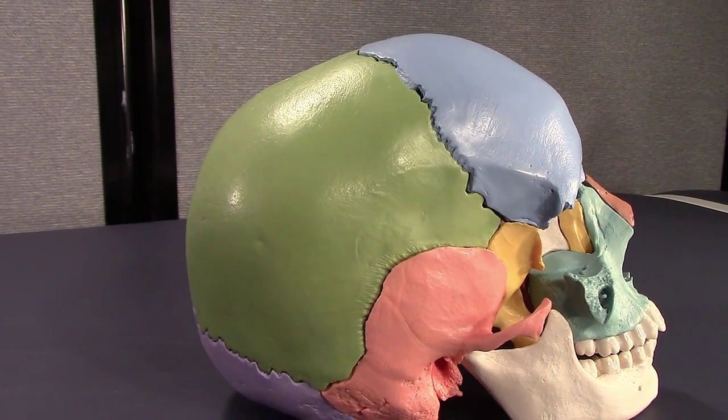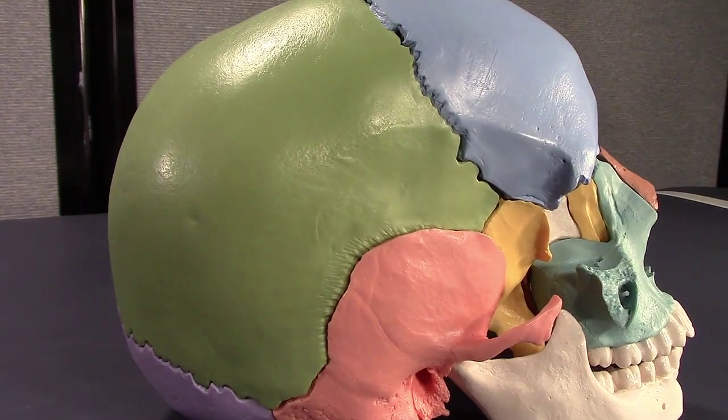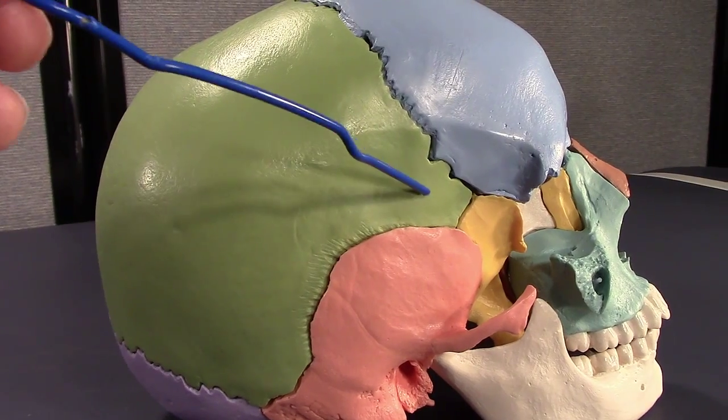Hi guys, Dr. Dillard again. Let's talk about the parietal bones, part of the neurocranium, and there's two of them. They're represented in green here in this model.